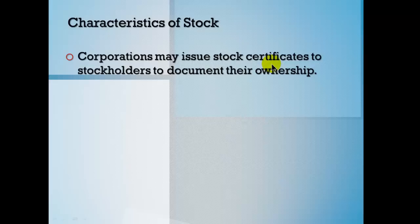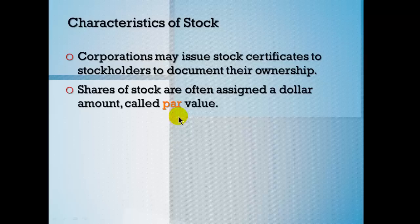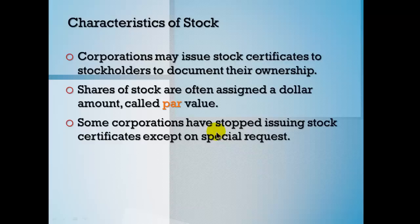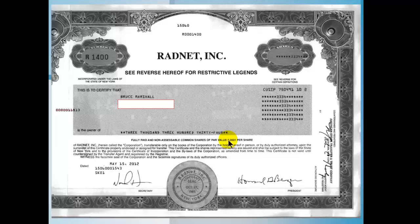Stock certificates are documentation of the shareholder's ownership in the company. Decades ago when everything was on paper, there was a lot of record keeping and mailing of certificates — pretty onerous. In the age of electronic tools, you don't need those paper certificates anymore. Par value is an arbitrary value you establish when you set up the corporation. You state what the par value is going to be when you determine how many shares you're going to have.